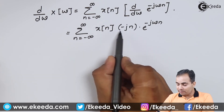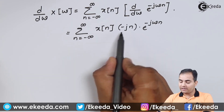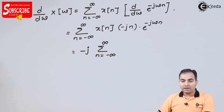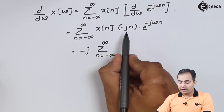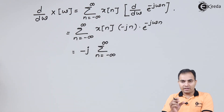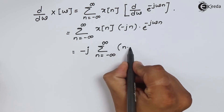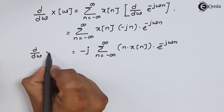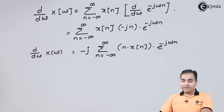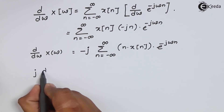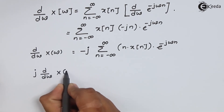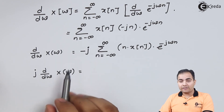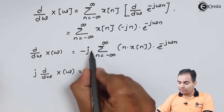In this summation, minus j is a constant term so we write minus j outside the summation. Then we consider n times x of n as the input. If we multiply both sides by j, then j times j equals j squared, and j squared equals minus one, so minus times minus becomes plus, leaving only the summation bracket.